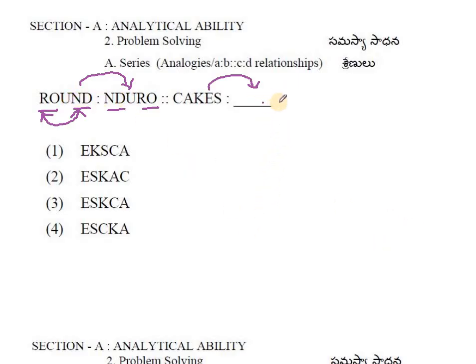Using the same logic, K will remain in the same place in the middle. CA will go to the last, and ES will come to the front end. So ESKCA is the correct answer. This is somewhat easy, though you have to think through it.